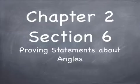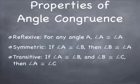Chapter 2, Section 6: Proving Statements About Angles. The properties of angle congruence are reflexive. For any angle A, angle A is congruent to angle A — any angle is congruent to itself.